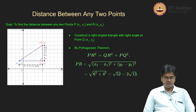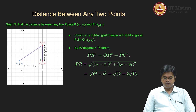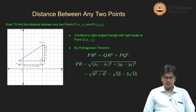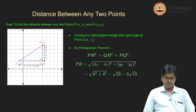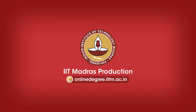Now we have established a general formula called the distance formula for finding the distance between any two points on a coordinate plane: the distance between points P(x₁, y₁) and R(x₂, y₂) is √((x₂ − x₁)² + (y₂ − y₁)²).